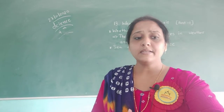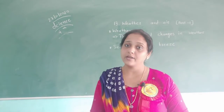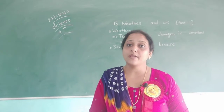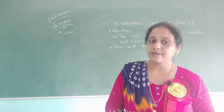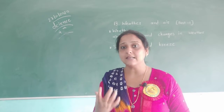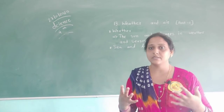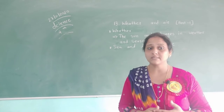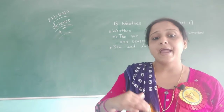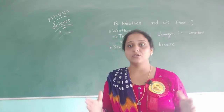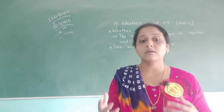We have already learned that air is a mixture of gases. It has two main gases: oxygen and nitrogen. Nitrogen forms the largest part, and oxygen forms the second largest part — nitrogen is more compared to oxygen. Apart from these, trace amounts of other gases like carbon dioxide and water vapor are also found in air, along with smoke, dust, and germs.